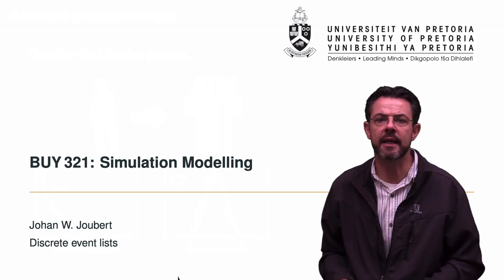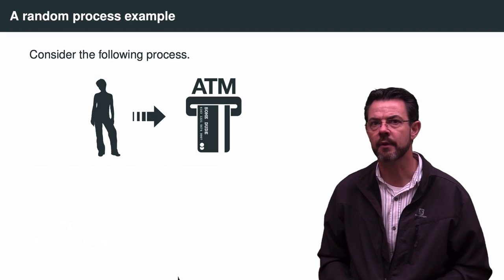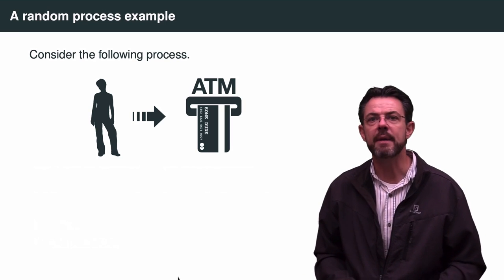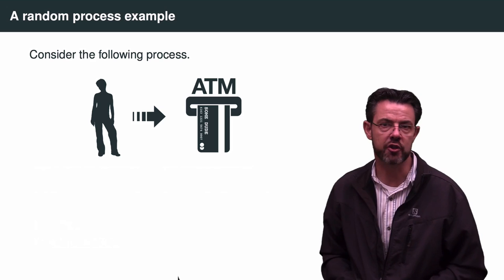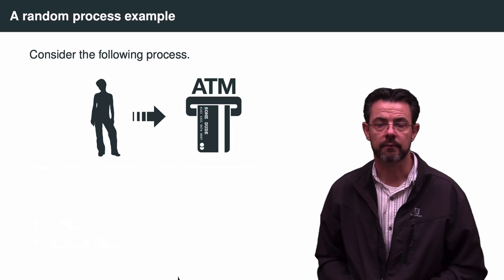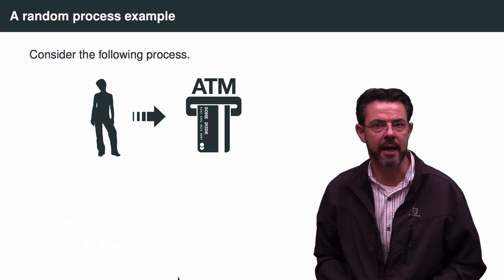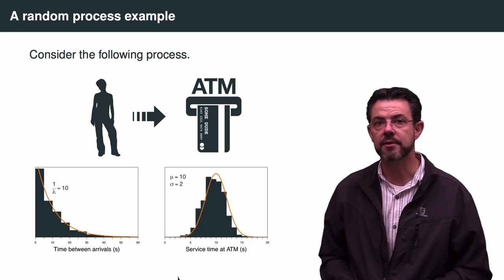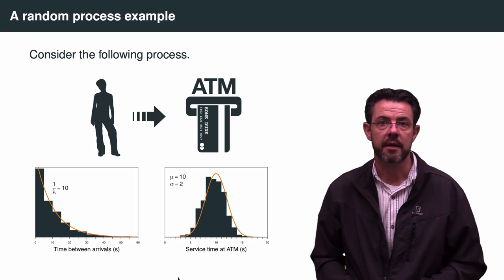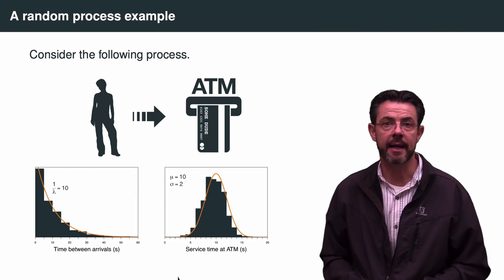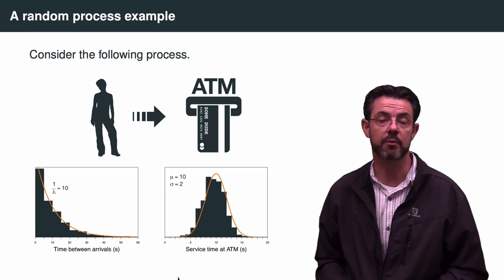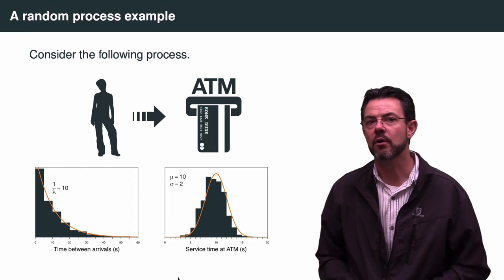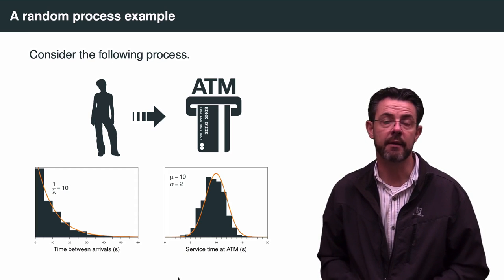But what is this thing called a discrete event list? To illustrate that, we're going to use a simple analogy where people arrive at an ATM — an automatic teller machine — to withdraw cash. This is a typical random process, and we'll use some fabricated data where the arrival rate, specifically the time between consecutive arrivals, is described by an exponential distribution with a lambda parameter of 0.1, meaning on average the time between arrivals is 10 seconds.